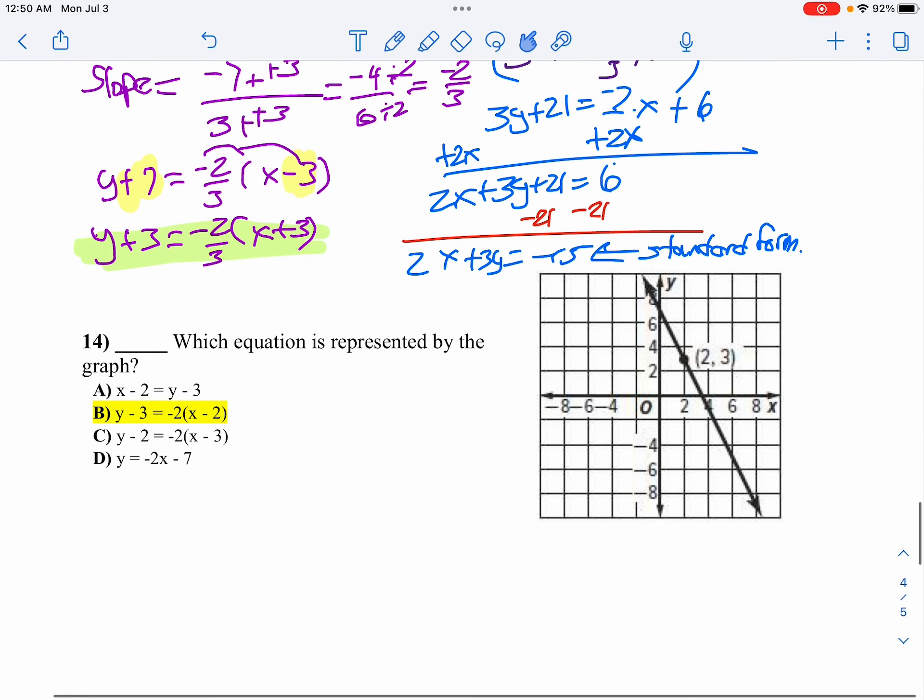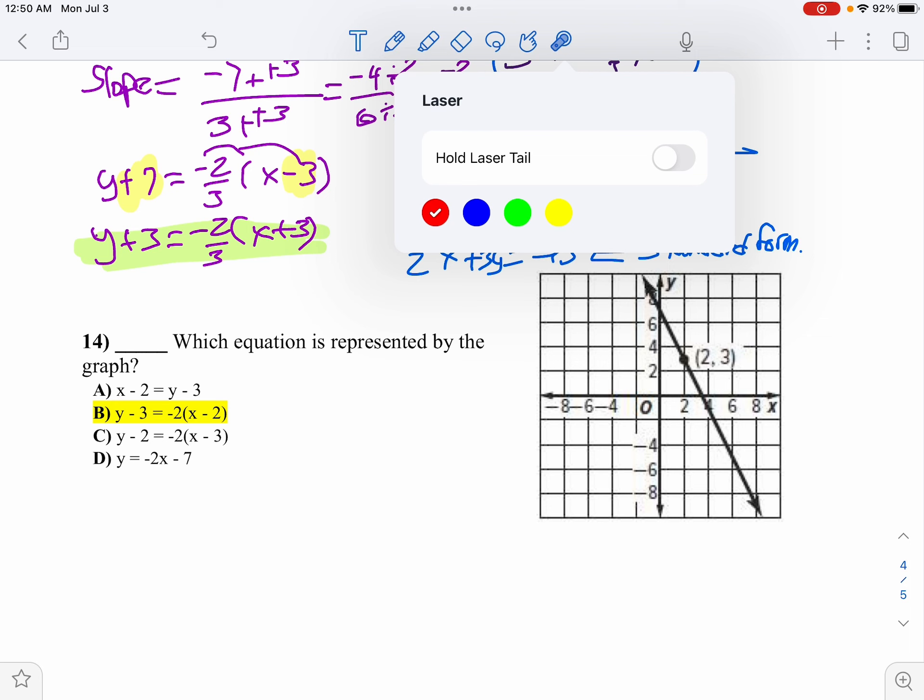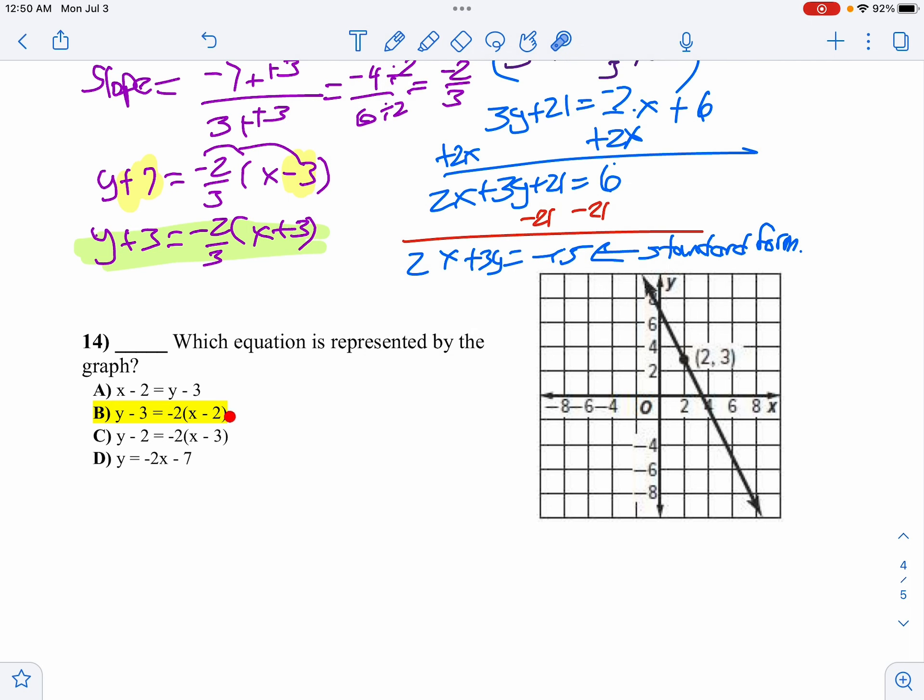Now if we take a look at question 14, I want to know which equation is represented by the graph. Now I know it goes through the point 2, 3. So I know I'm going to do y minus 3. Well, the only one that has y minus 3 in it is choice B, isn't it? They don't have to do any extra work there because choice B is the only possibility I could get to have that in point-slope form.